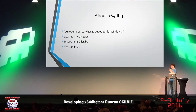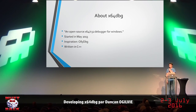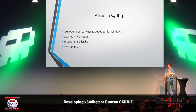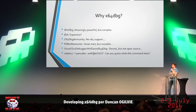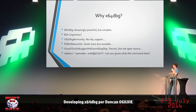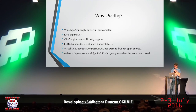About x64dbg: the official line is an open source x64/x32 debugger for Windows. It started in May 2013, and basically it came out of a need for a 64-bit debugger on Windows. It was greatly inspired by OllyDbg, as you will see soon. I wrote it in C++ because that was the only language I knew at the time. None of the existing alternatives fit my requirements, so I decided to roll my own and see how that worked out.